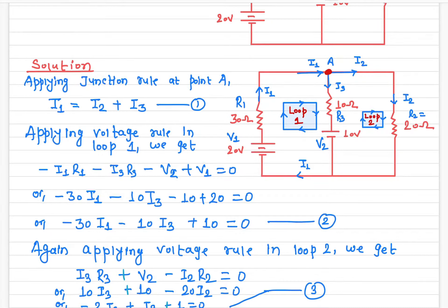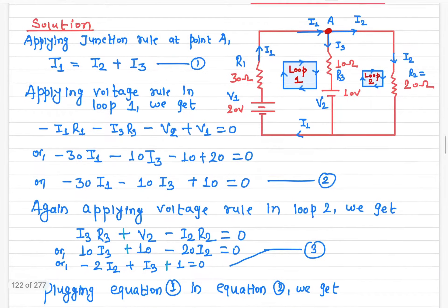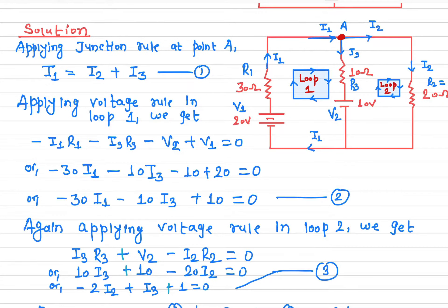After defining the current direction, we're going to choose the loop direction. I have chosen this loop here, and you can choose the loop direction to be either clockwise or anti-clockwise. I have chosen clockwise direction. In both cases it's entirely up to you — it doesn't matter at all.